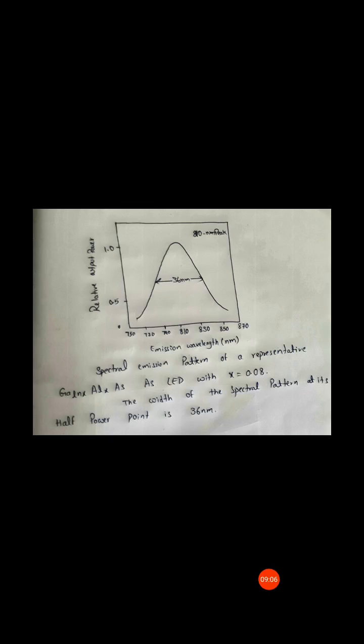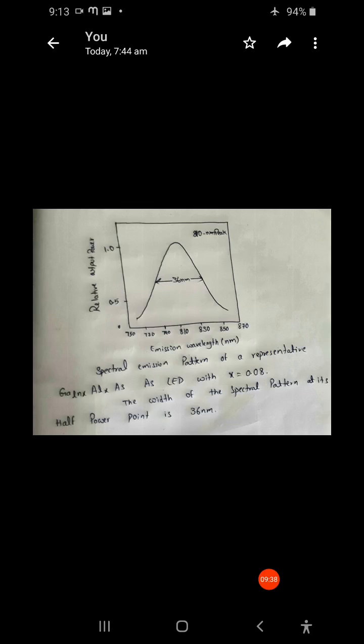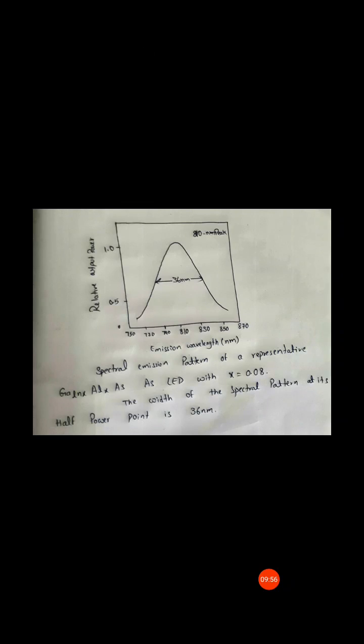At longer wavelengths, the quaternary alloy indium gallium arsenic phosphorus (InGaAsP) is one of the primary materials. By varying the mole fractions x and y in the active area, LEDs with peak output powers can be obtained anywhere between 1.0 and 1.7 micrometers.